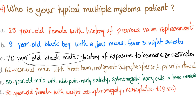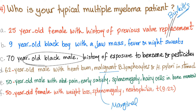B is Burkitt's lymphoma, which is a non-Hodgkin's lymphoma. D is marginal zone B-cell lymphoma. E is hairy cell leukemia. F — neutrophilia, splenomegaly, with the 9;22 translocation — this is chronic myelogenous leukemia, CML.